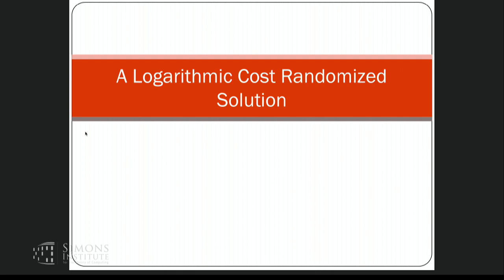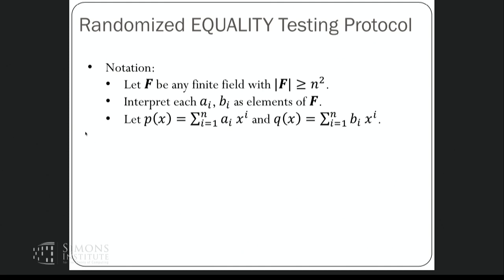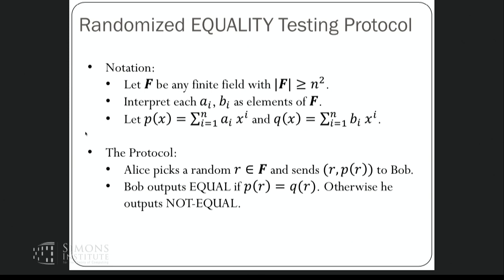There's a trivial solution: Alice sends her whole bit string to Bob, who checks if it equals his. The cost is n bits. For deterministic protocols this is the best you can do. The interesting case is if you allow the protocol to be randomized and have a very small probability of outputting the wrong answer. I'll let F be a finite field of size at least about n squared — you can think of it as integers modulo some prime p, where p is bigger than n squared.